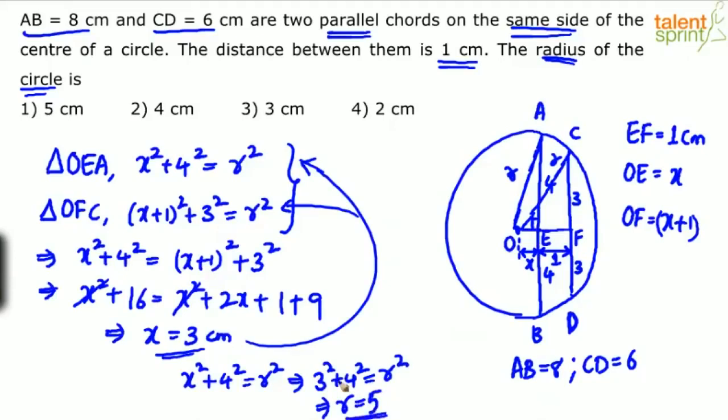This is a very popular Pythagorean triplet: 3, 4, 5. X is equal to 3. This is 3 and this is 4, so obviously this has to be 5. Or if you look at this, 3 plus 1 gives 4, this length is 4 and this is 3, so this has to be 5. So the answer here is option 1: 5 centimeters.